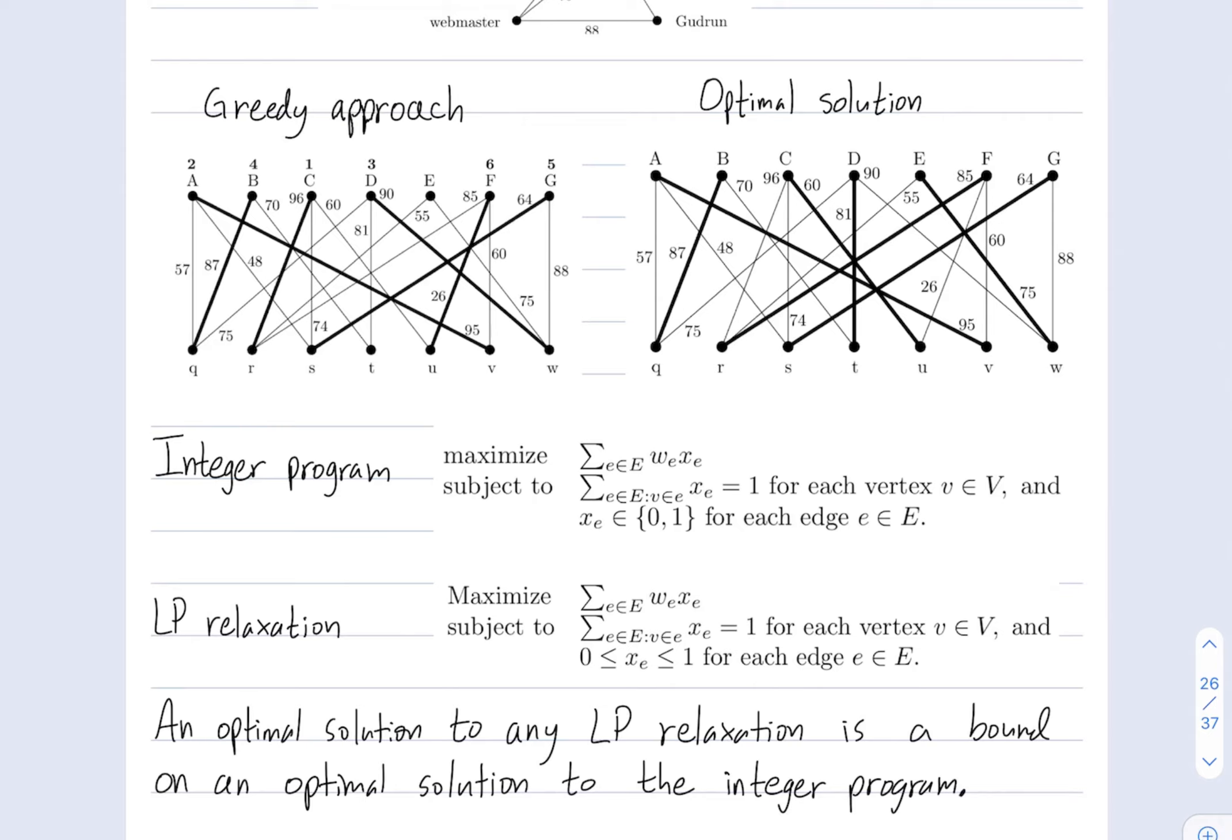For a different vertex, maybe this vertex corresponding to person c, I'm summing over all the edges that contain that vertex, and I want exactly one of them to be included in my matching.